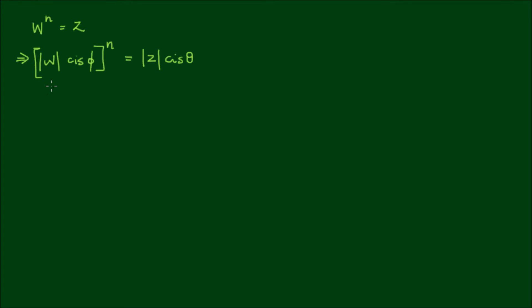I can apply De Moivre's theorem to the left-hand side. This gives |w|^n cis(nφ) equals |z| cis θ. There are two parts to each side of the equation. If we equate the first part, so |w|^n equals |z|, then it follows that cis(nφ) must also equal cis θ. We can deduce further that nφ equals θ. Now here's the tricky part.